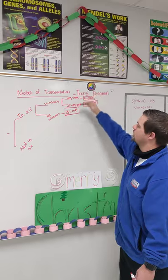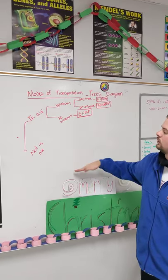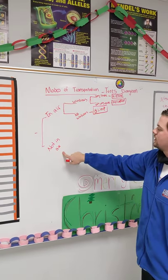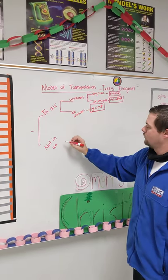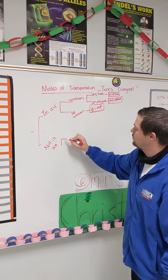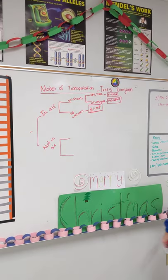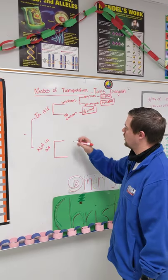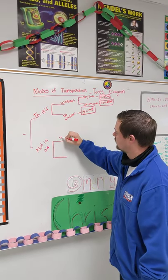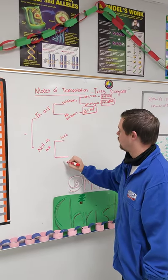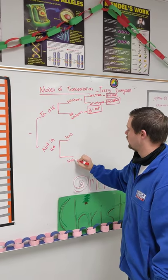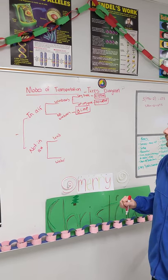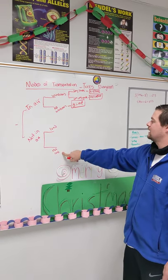So our tree is kind of extending out. Now we have the other side of our category. So we're looking at all of our modes of transportation that are not in the air. Okay, so we need to break these up into two categories as well. So which ones are not in air? We can say ones that are on land, or ones that are in the water. So we're looking at land and not land.